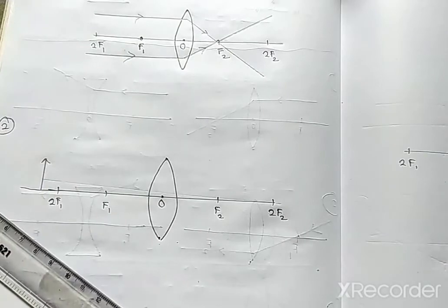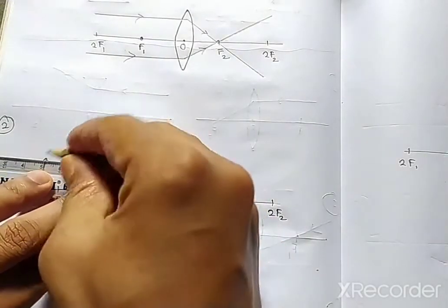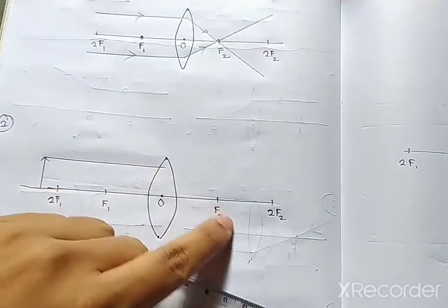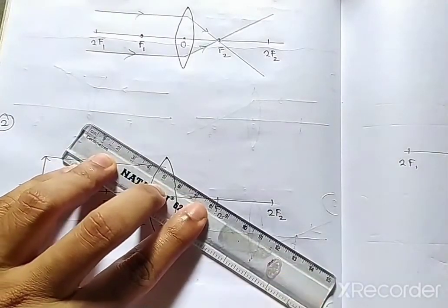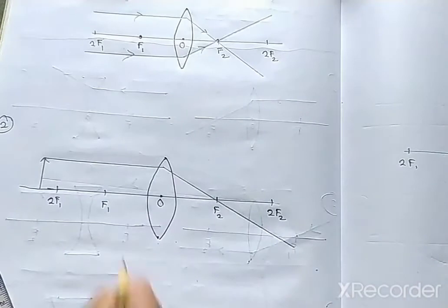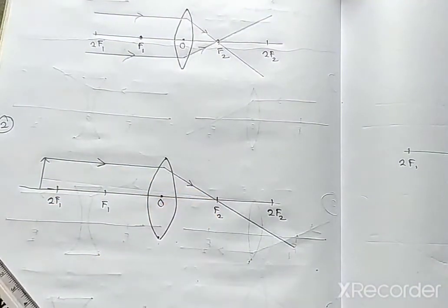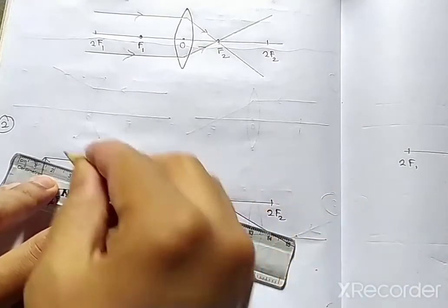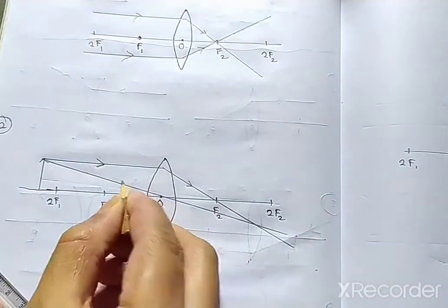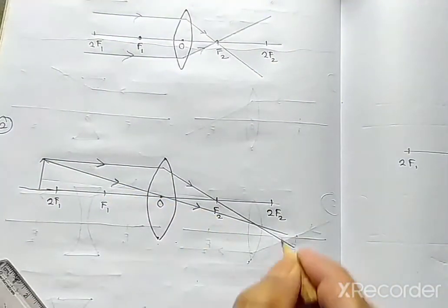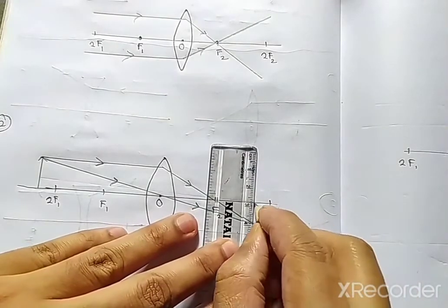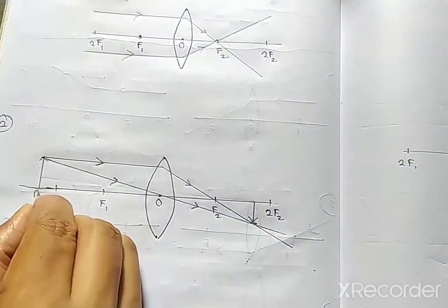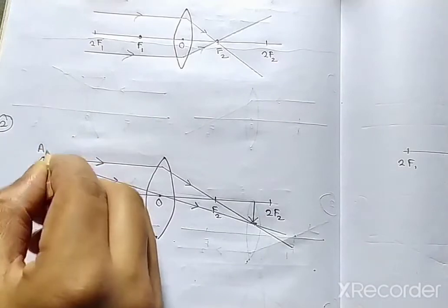In the second diagram, we are keeping the object beyond 2F1. A ray comes parallel and meets at F2 and 2F2. One more ray is coming from the optical center. The image is formed between F2 and 2F2. So when the object is beyond 2F1, the image is formed between F2 and 2F2. It is diminished, and the nature of the image is real and inverted.